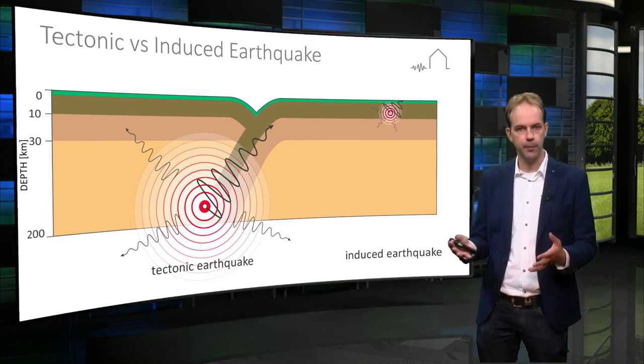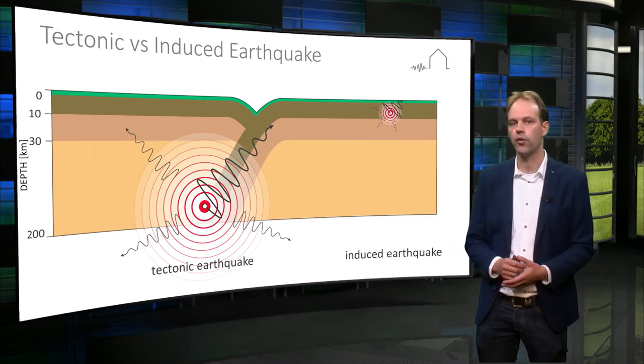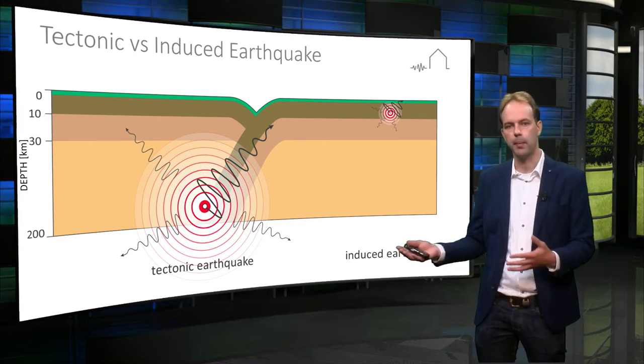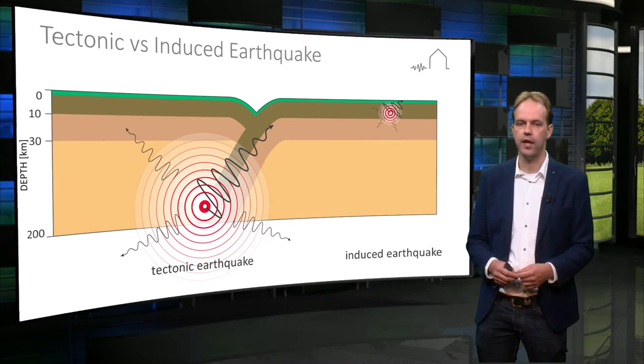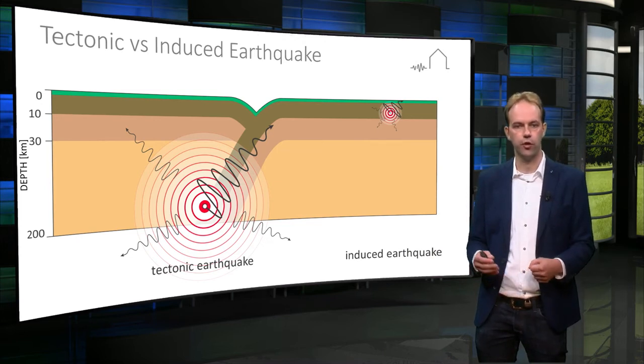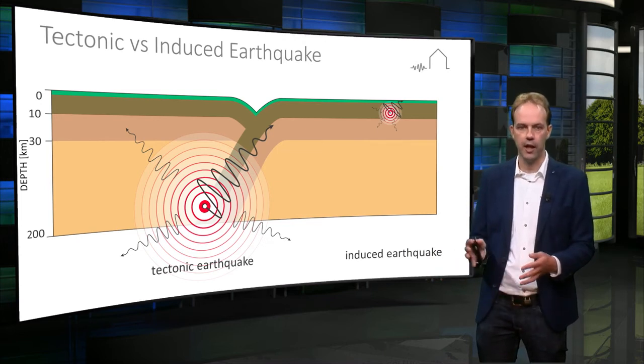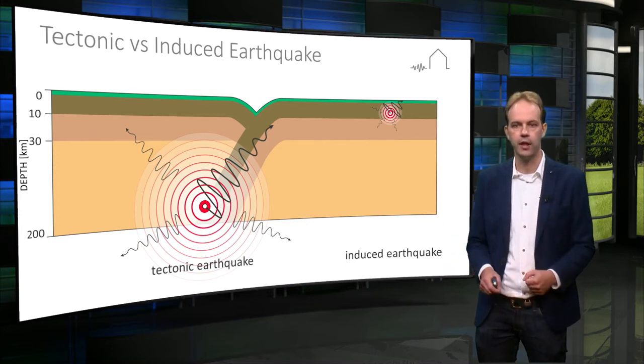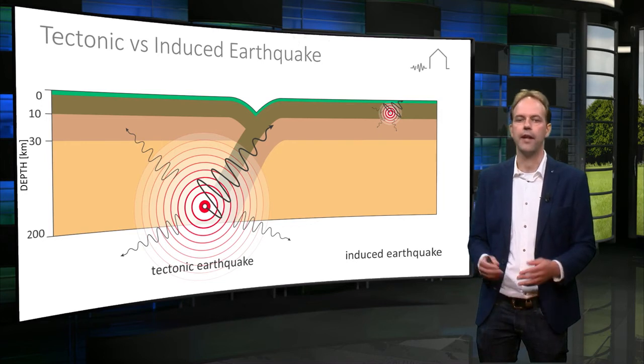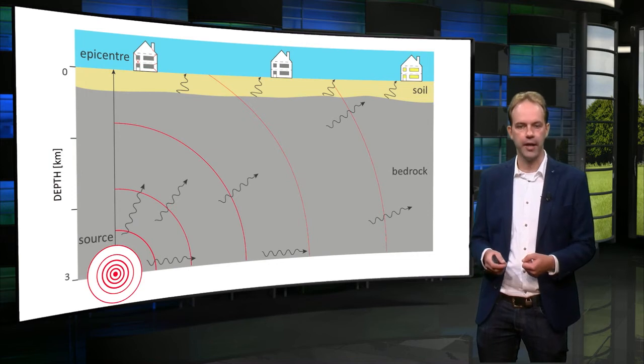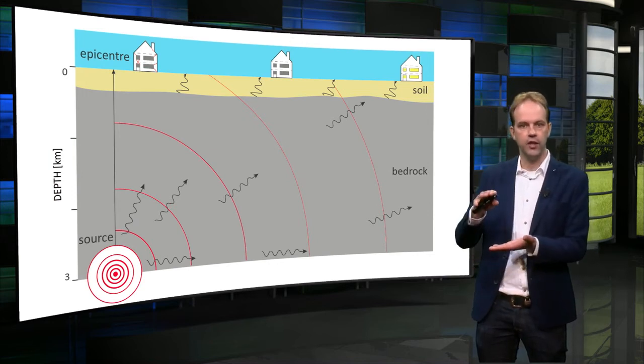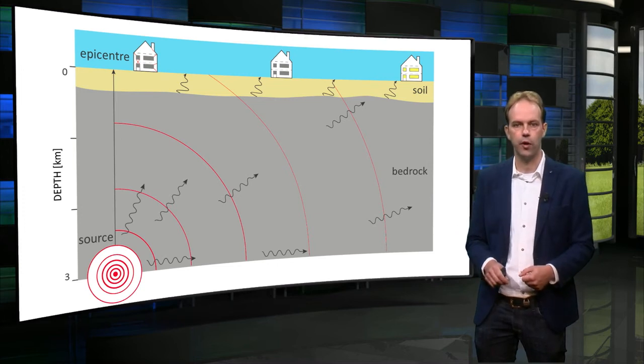Therefore, the depth of an earthquake can also play an important role when considering the damage the earthquake might do. Deep earthquakes do not necessarily have large amplitudes at the surface of the earth, while shallow, relatively small earthquakes can still have relatively large amplitudes at the earth's surface. And this is of importance in the Groninger situation, where compaction-related seismicity due to gas production occurs at relatively shallow levels in the subsurface of the earth.